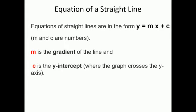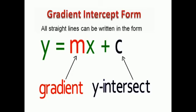Equation of a straight line. Equations of a straight line are in the form of y is equal to mx plus c. m and c are numbers, and x and y are the variables. m is the gradient of the line and c is the y-intercept. So always we can write the equation of a straight line as y equal to mx plus c, where m is the gradient and c is the y-intercept.